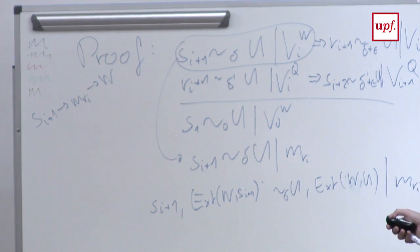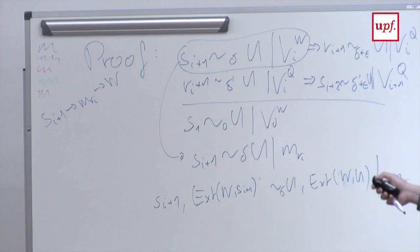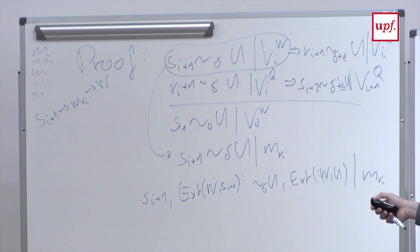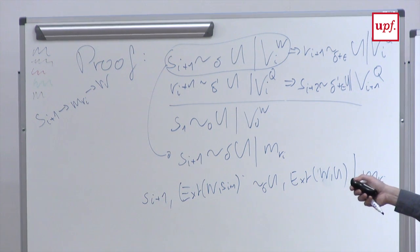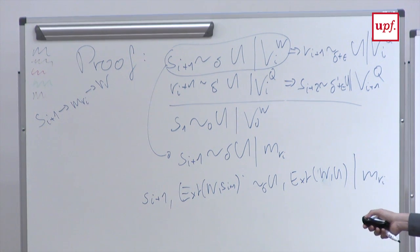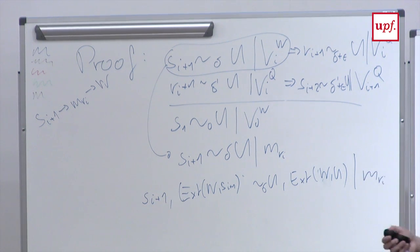There is a lemma — probably common knowledge but proved in the paper — that says: if you have two variables A and B that are initially independent, and you start computing messages going back and forth between them (each message can depend on messages exchanged so far), then A, the messages, and B form a Markov chain.